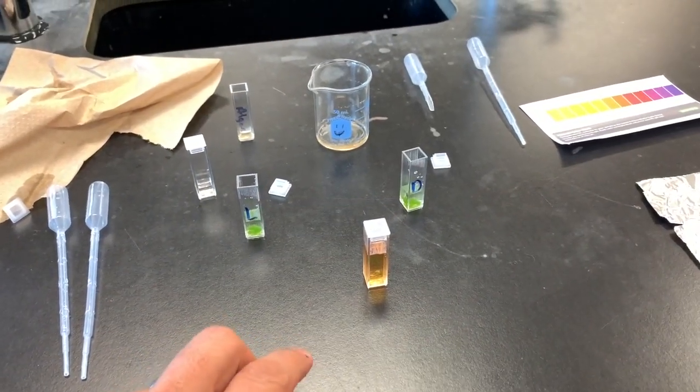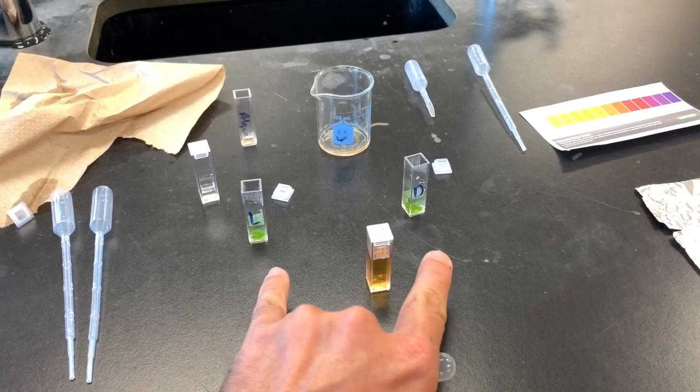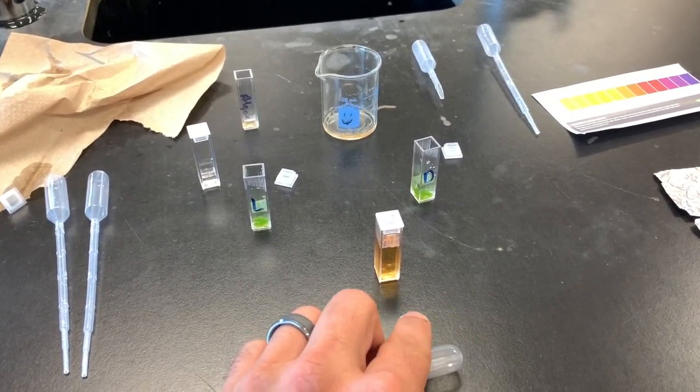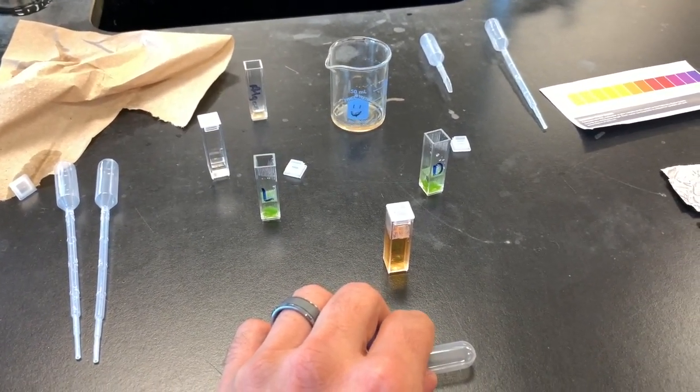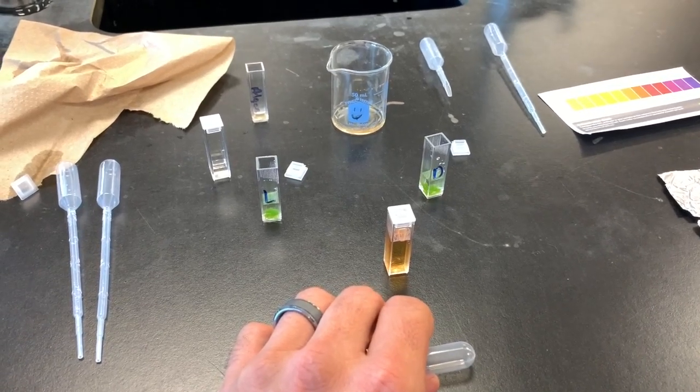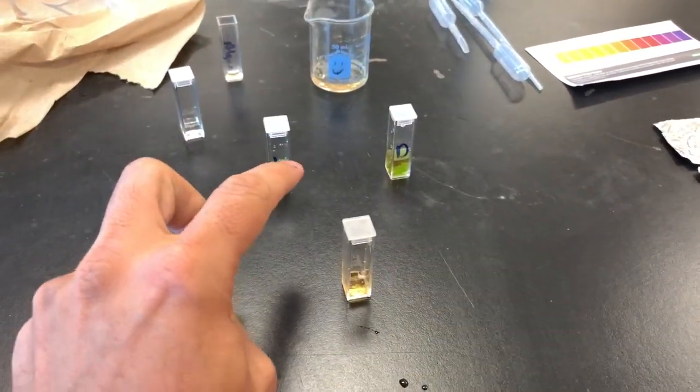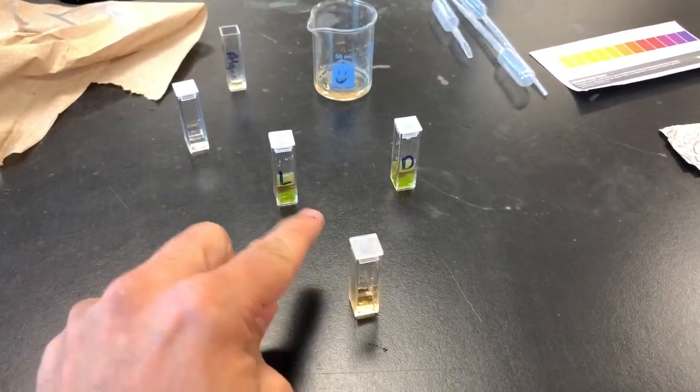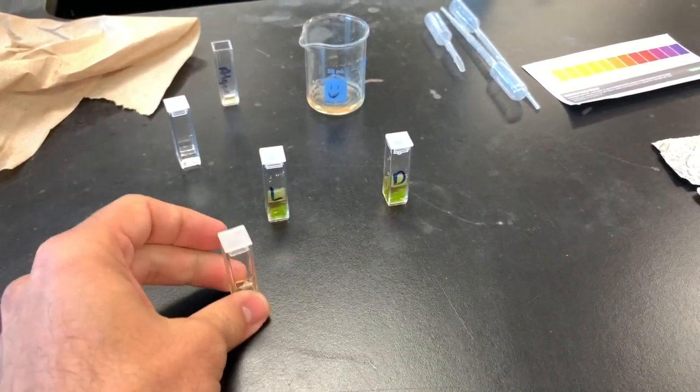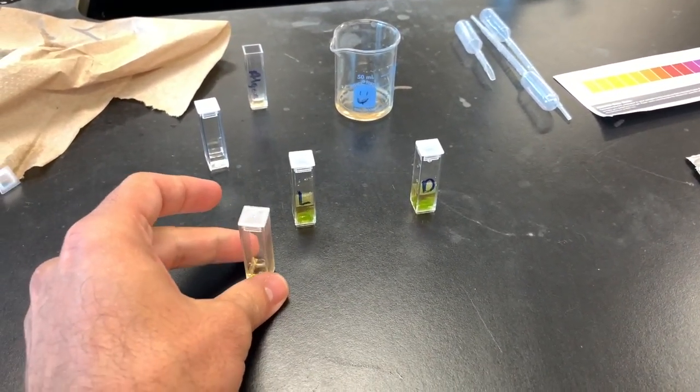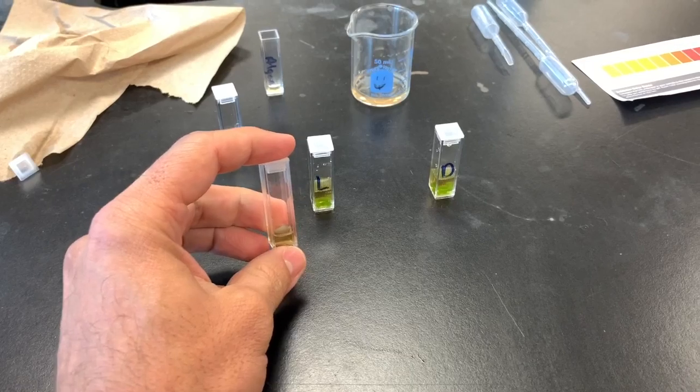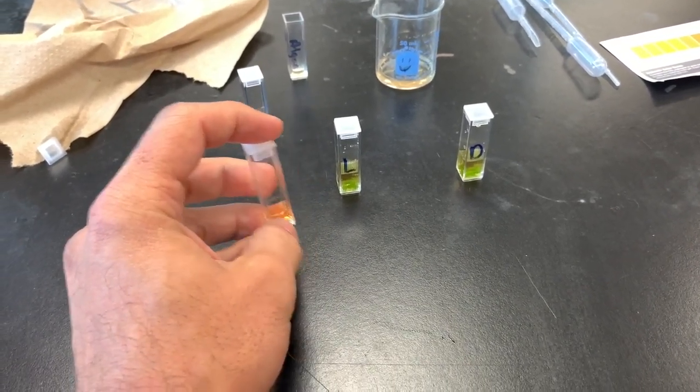So once you have the indicator solution in each one of those, you're going to take an initial pH reading. And I'll show you what that looks like. Okay, so here you can see I removed the water, the distilled water that was in there, allowing the algae beads to wash out. And I have replaced the water in there with one milliliter of the indicator solution.